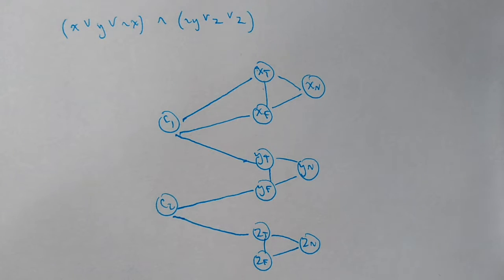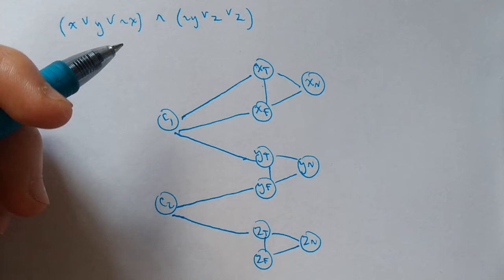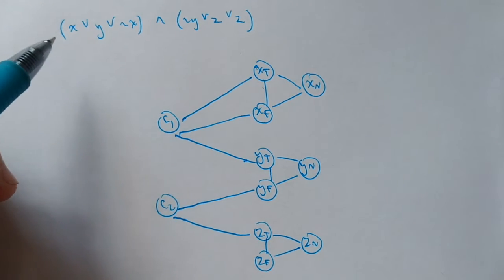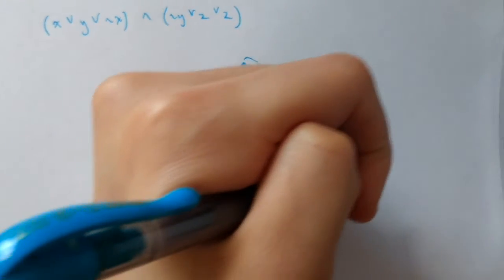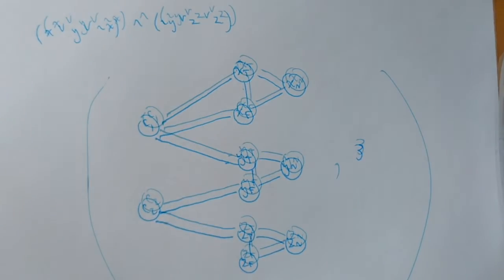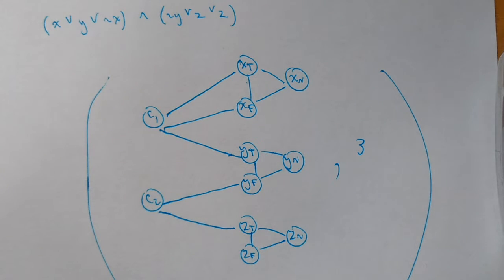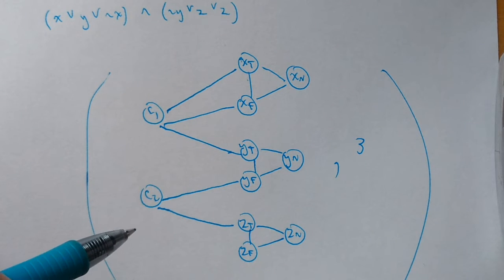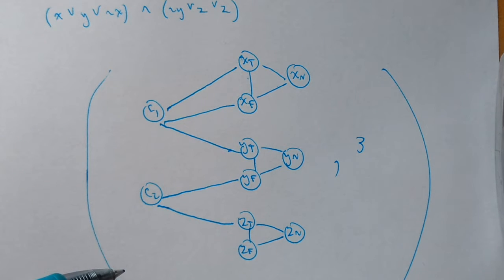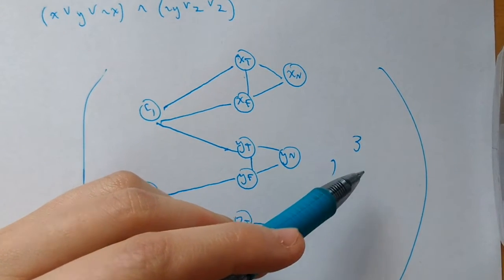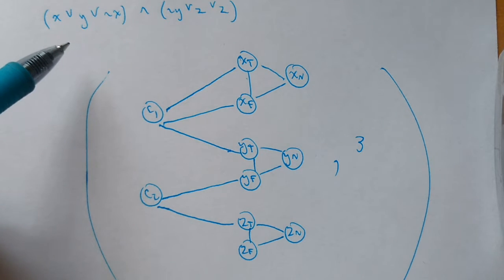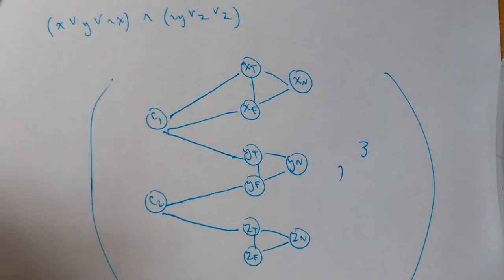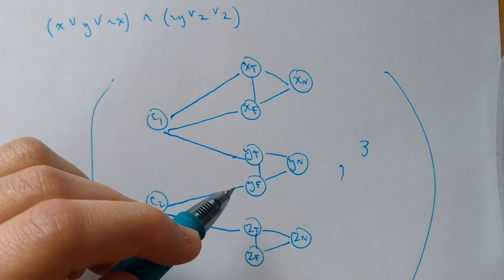We add edges from each clause node to every literal that appears in that clause. So if true-x appears in clause 1, we add an edge to clause 1; true-y and false-x also connect to clause 1. False-y and true-z connect to clause 2. We output the graph G plus n, where n is the number of variables in the original Boolean expression. With three variables x, y, z, we output G and 3. Notice the original expression doesn't give us the assignments — the final graph doesn't have the dominating set built in. There must exist a dominating set of size n if the original expression was satisfiable.